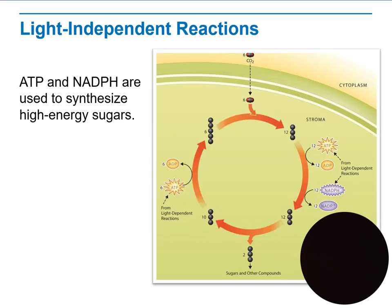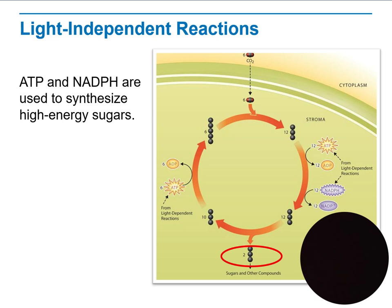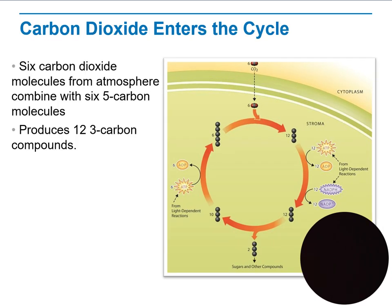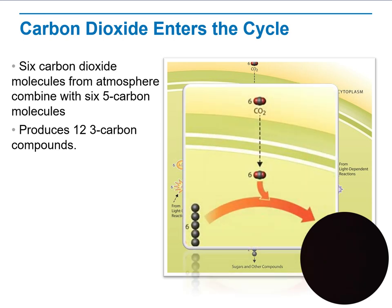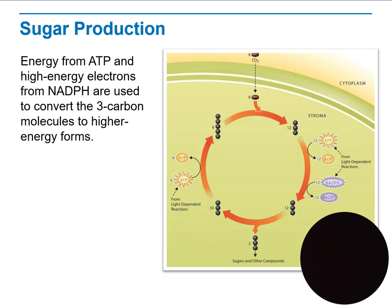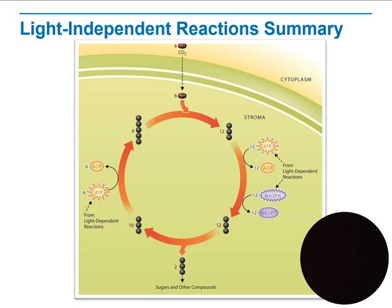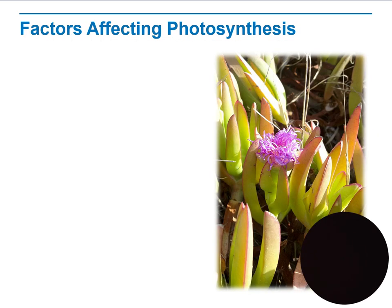In the light-independent reaction, ATP and NADPH are used to synthesize high-energy sugar. Six carbon dioxide molecules from the atmosphere combine with six five-carbon molecules to produce twelve three-carbon compounds. Energy from ATP and high-energy electrons from NADPH are then used to convert the three-carbon molecules to higher energy forms in a cycle.